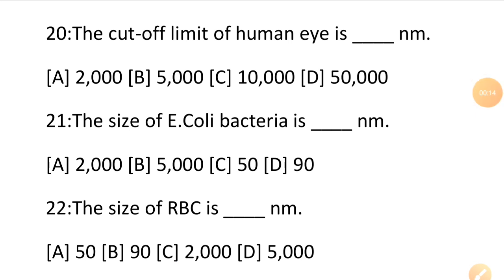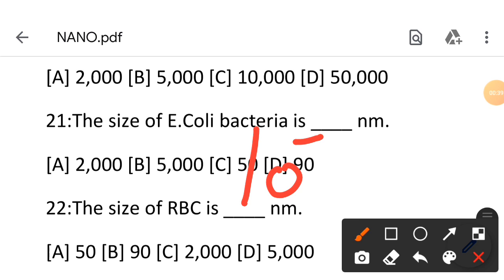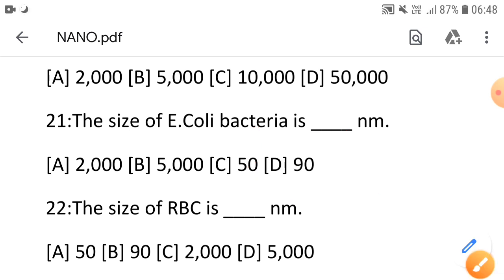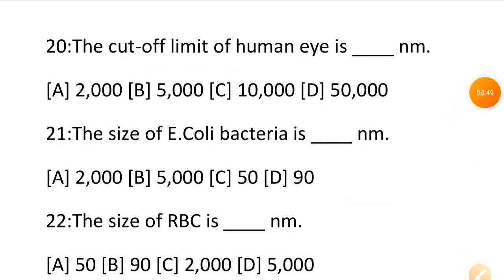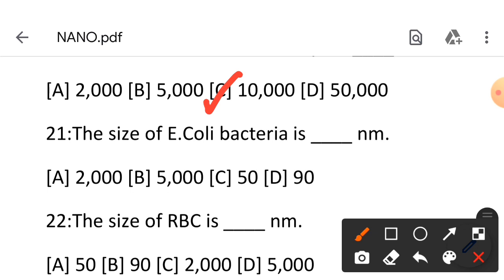Next question is number 20: the cutoff limit of human eye is dash nanometer. The cutoff limit of human eye is nearly 10 raised to power minus 5 meter. We need to convert to nanometer. So 10 raised to power minus 5 and nanometer is 10 raised to power minus 9, which means total 10 raised to power 4. The answer is option C, 10,000.